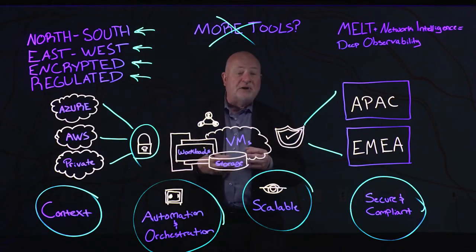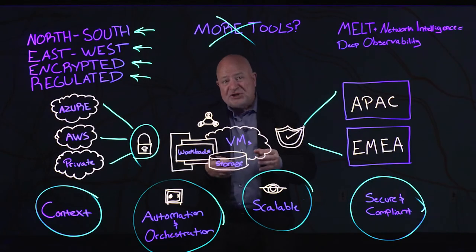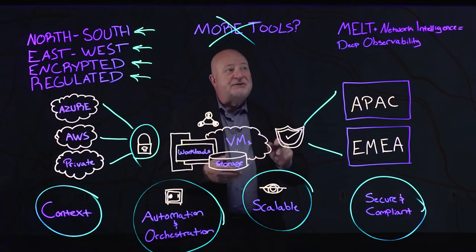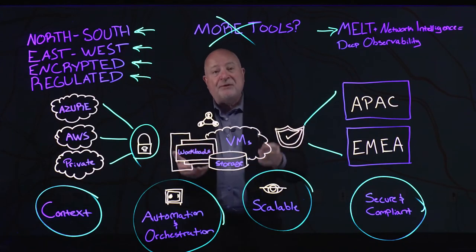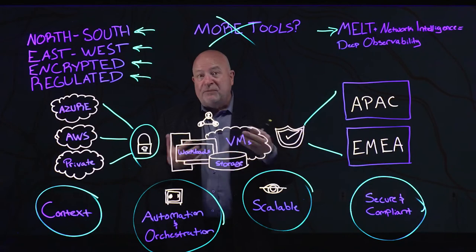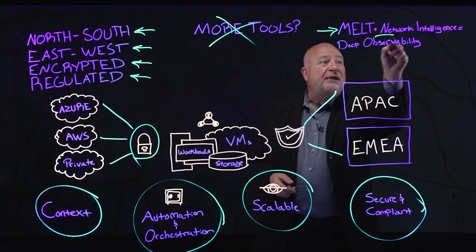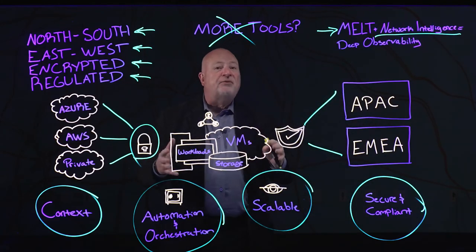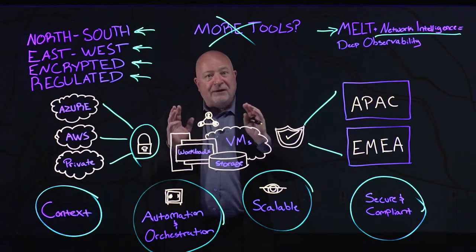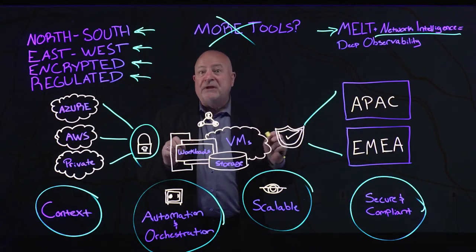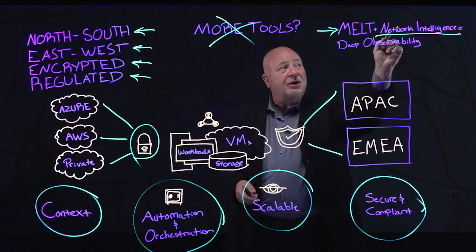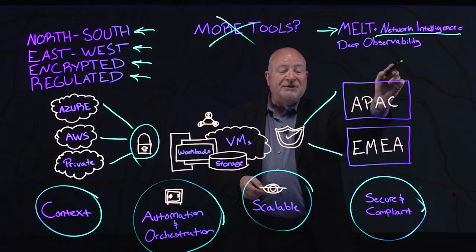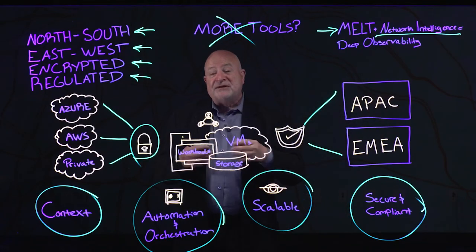This is the underlying concept of the Gigamon Deep Observability Pipeline. Our definition of deep observability comes down to two things: the observability you get through cloud-based tools — the metrics, events, logs, and traces that you build into your applications — augmented with network intelligence. The information that can only come from knowing at packet level, at flow level, at metadata level, exactly what's happening on the network. The metrics, events, logs, and traces combined with your network intelligence gives you the deep observability to build a secure, uniform security posture across any environment.